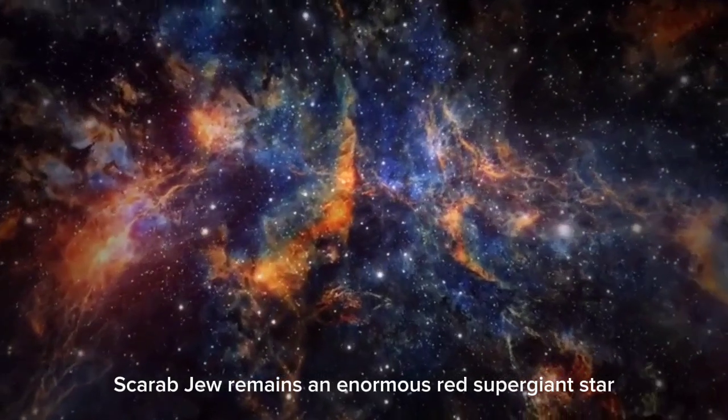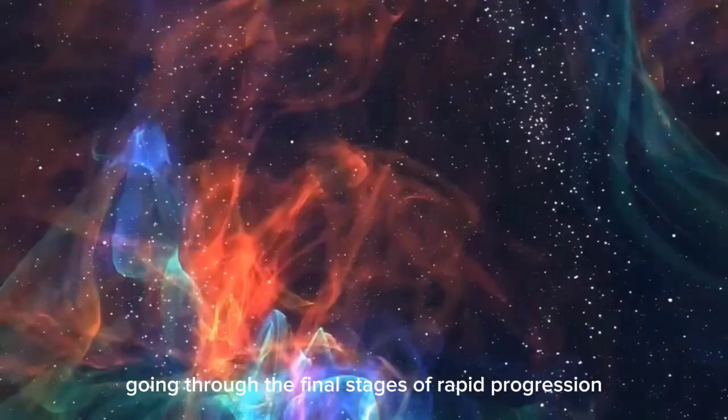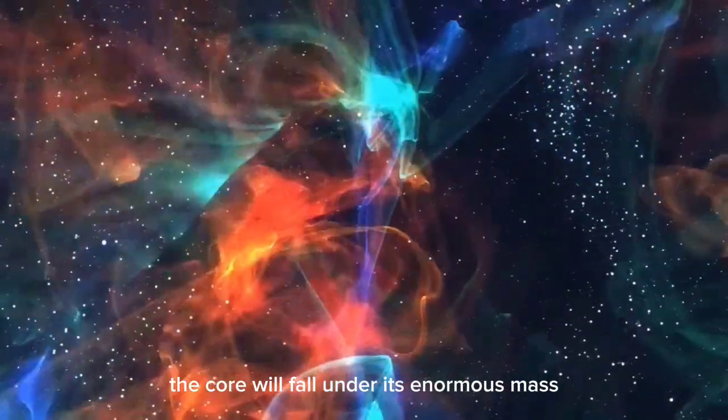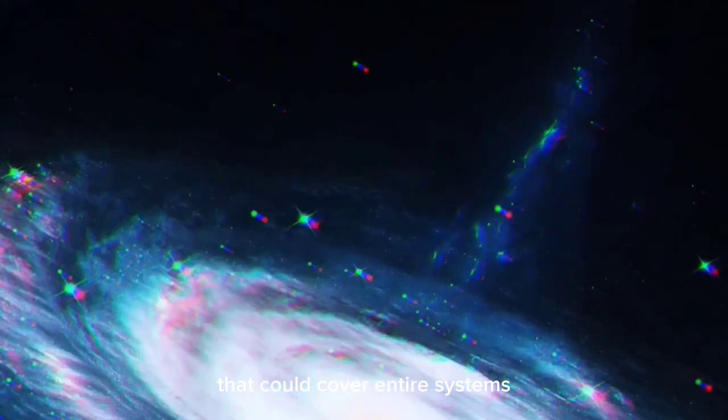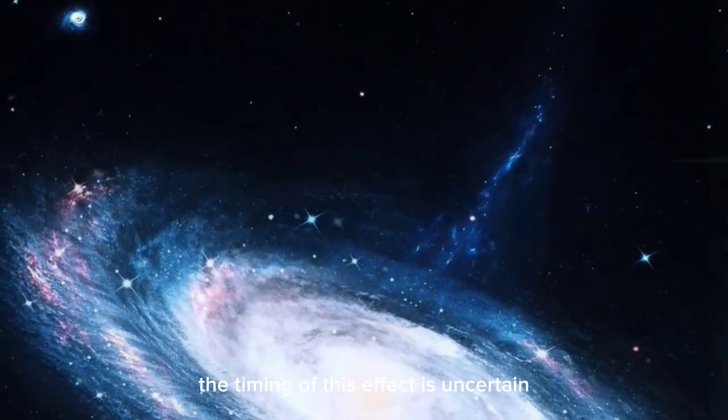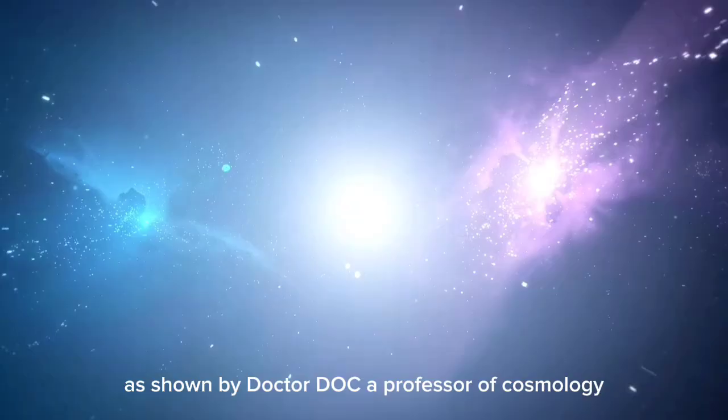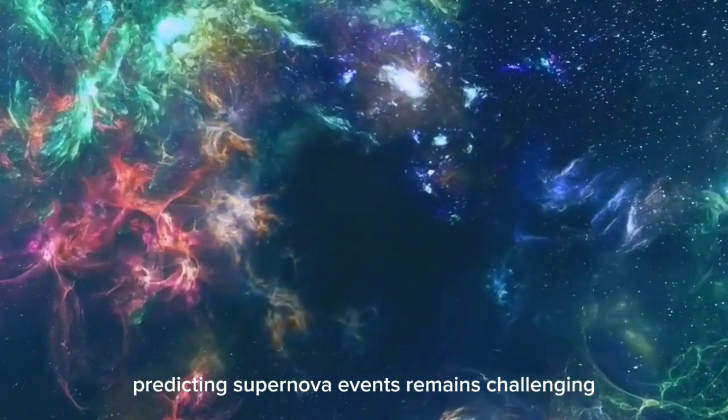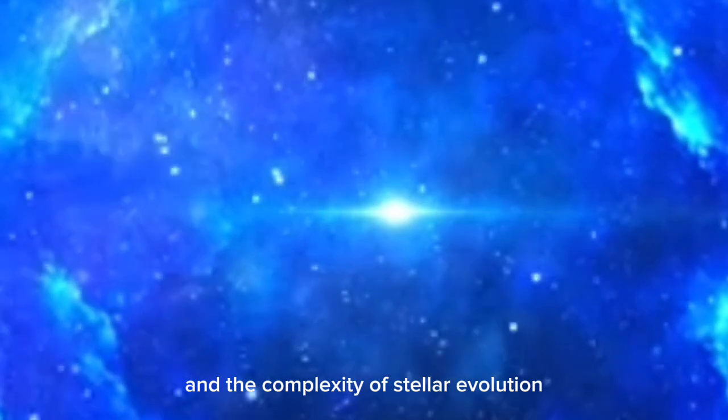Betelgeuse remains an enormous red supergiant star, going through the final stages of rapid progression as it depletes its fuel. The core will fall under its enormous mass, leading to an infinite blast impact that could cover entire systems. The timing of this effect is uncertain, as shown by Dr. Doch, a professor of cosmology at the University of Portsmouth. Predicting supernova events remains challenging, given the limited historical data and the complexity of stellar evolution.